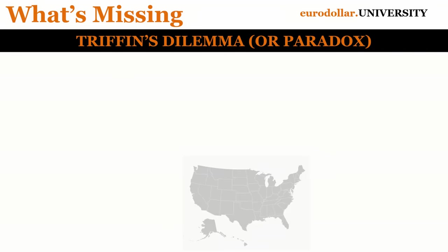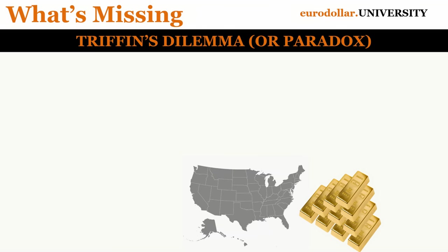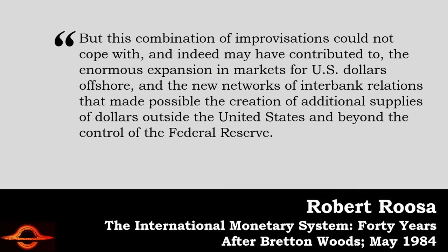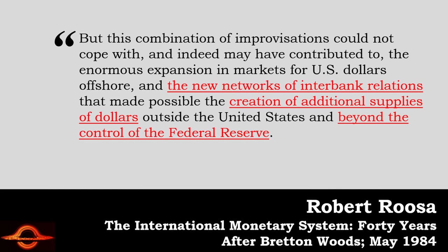Going back to Robert Russo — who was at the same conference as Mr. Solomon in 1984, and who had been undersecretary of treasury in the Kennedy and Johnson administration and a vice president of the Federal Reserve Bank of New York — he described the Eurodollar system in the best, most succinct terms I've seen in 20-some odd years of research. What Russo said in 1984: this combination of improvisations — the governments trying to cope with Bretton Woods — could not cope and indeed may have contributed to the enormous expansion in markets for U.S. dollars offshore. The new networks of interbank relations made possible the creation of additional supplies of dollars outside the United States and beyond the control of the Federal Reserve.